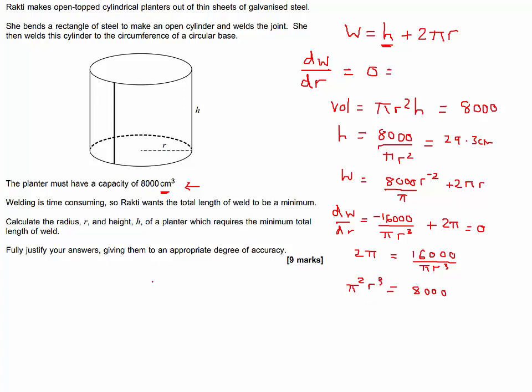Then to work out R, we would need the cube root of 8000 over pi squared, which equals 9.32 and remember we're working in centimeters. So we can then work out H, put in the value for R into our formula which comes out 29.3 centimeters.